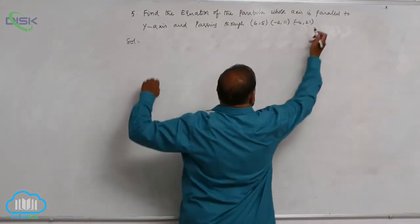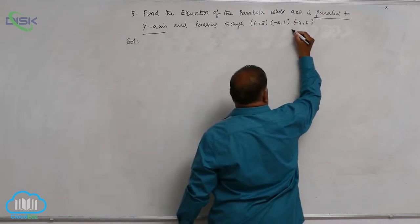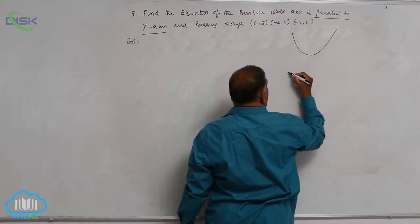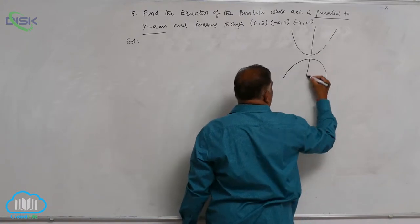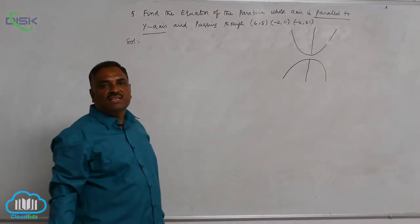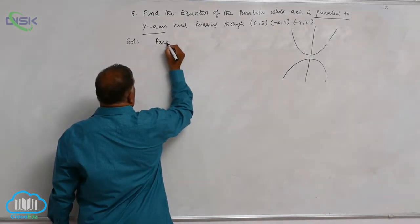Here, axis is parallel to y-axis. That means parabola can be like this upward or it can be downward. So in both the cases, parabola's axis is always parallel to y-axis.